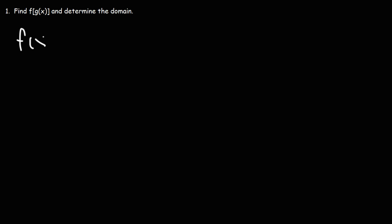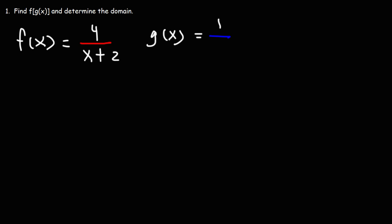In this video, we're going to talk about how to find the domain of a composite function. Let's say that f of x is 4 divided by x plus 2, and g of x is also going to be a rational function. Let's say g of x is 1 over x.